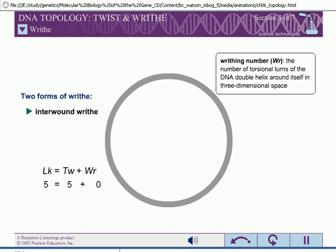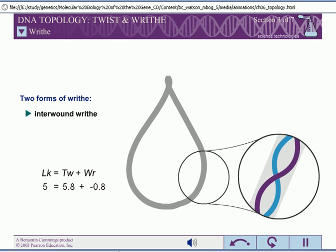The writhing number is the total number of writhes in a molecule of DNA. If right-handed DNA forms a right-handed interwound helix, the DNA must twist to accommodate the writhe. Therefore, right-handed interwound turns are assigned negative writhing numbers.